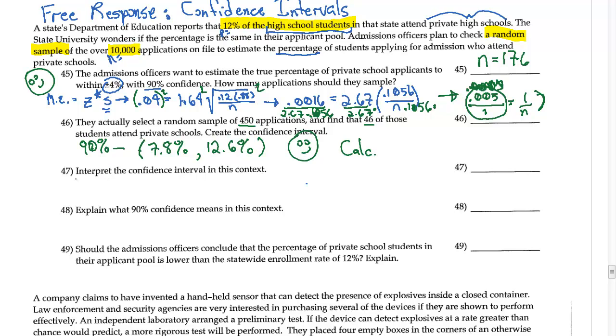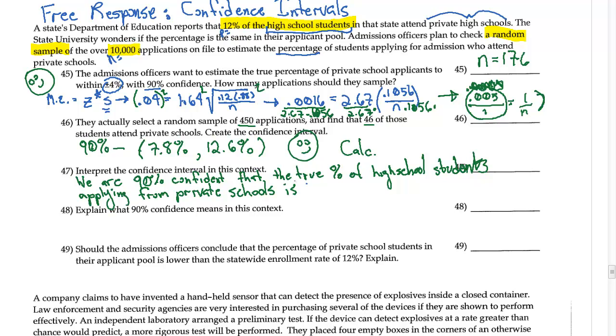Interpret the confidence interval. We are 90% confident that the true percentage of high school students applying from private schools is between 7.8% and 12.6%.